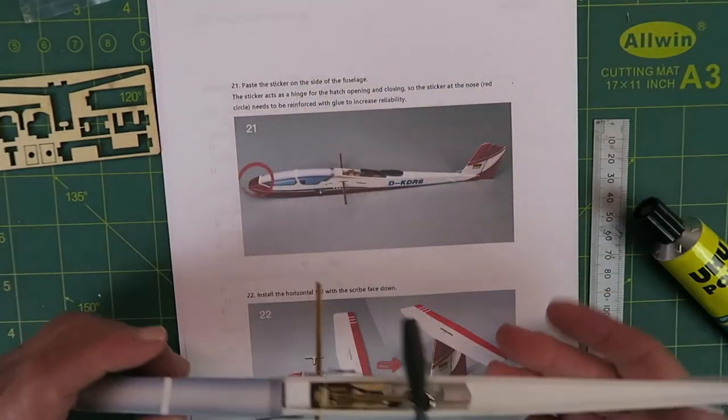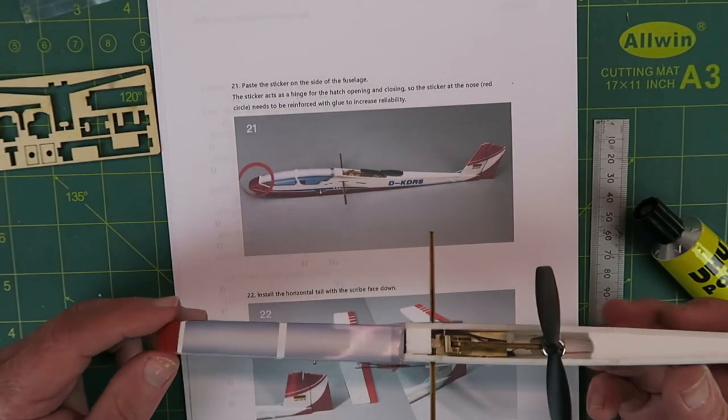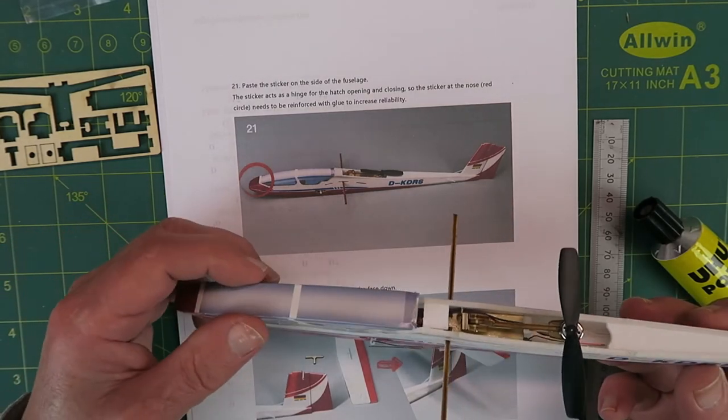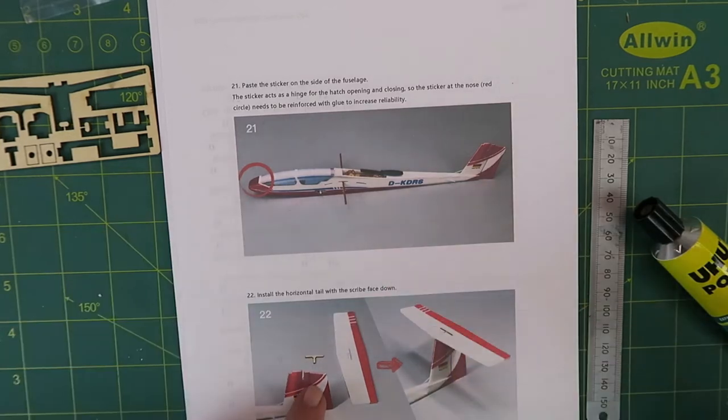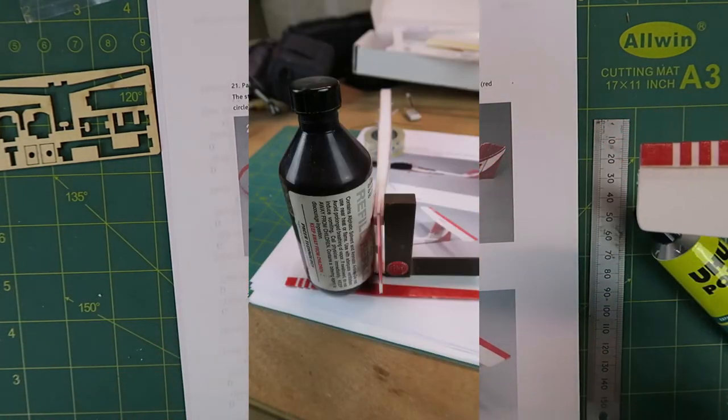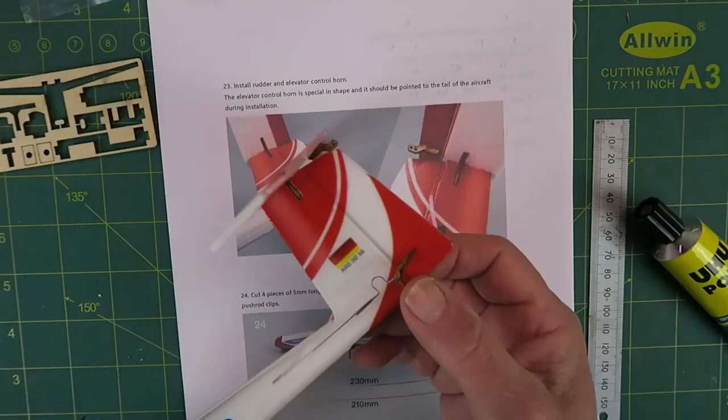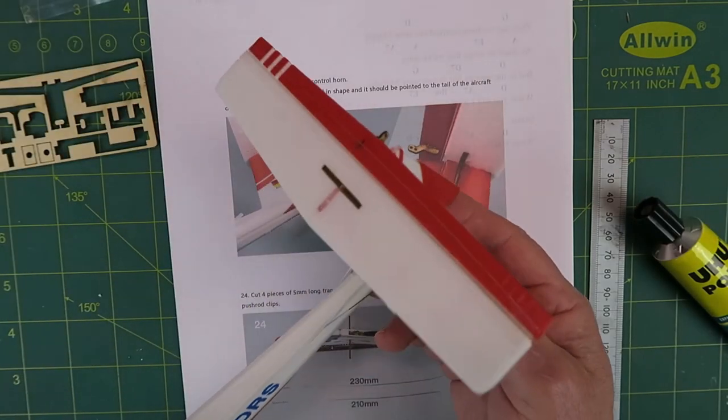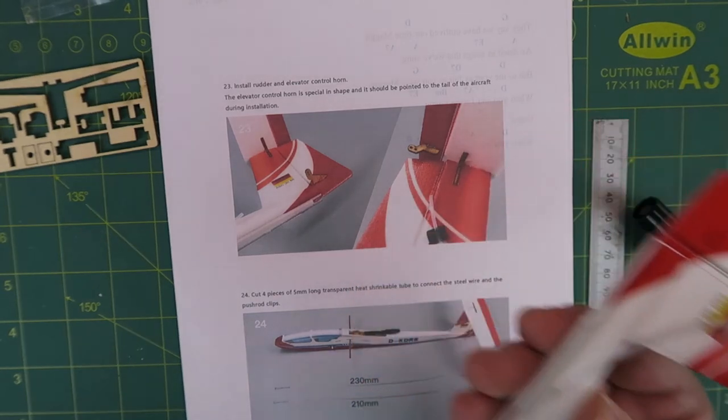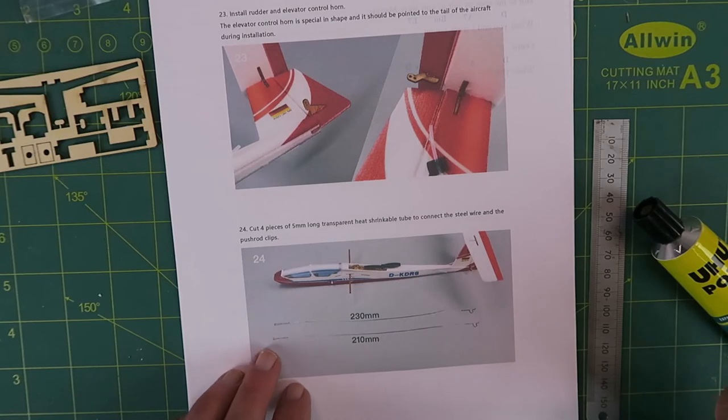I've gone ahead and performed the next tasks: putting the sticker on the front here—that acts as a hinge for the canopy there—and also assembled the t-tail. That's all quite straightforward. The little control horns, nothing much to say about those.